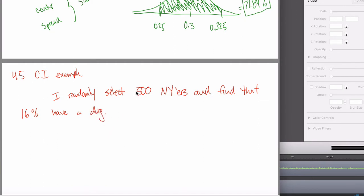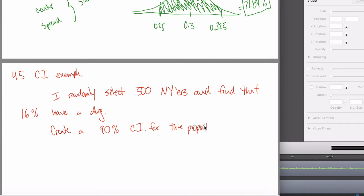Given that information, what I might be asked to do is create a 90% confidence interval for p, the proportion of all New Yorkers who have a dog.